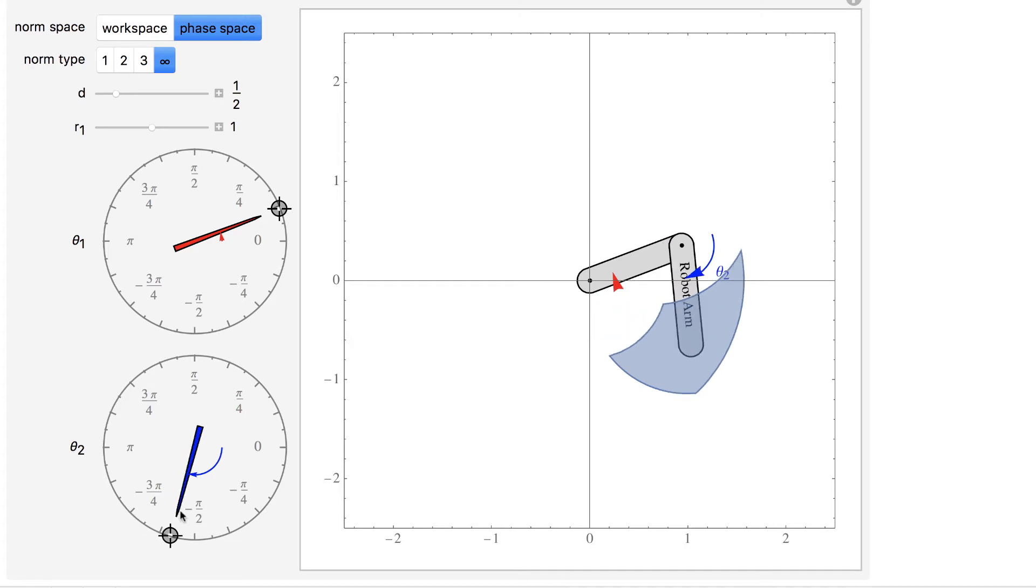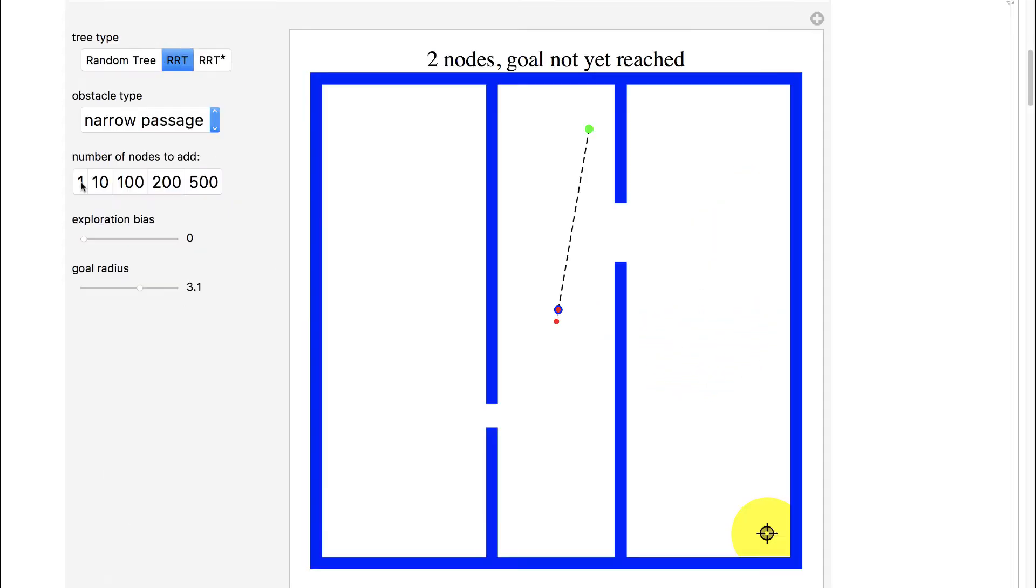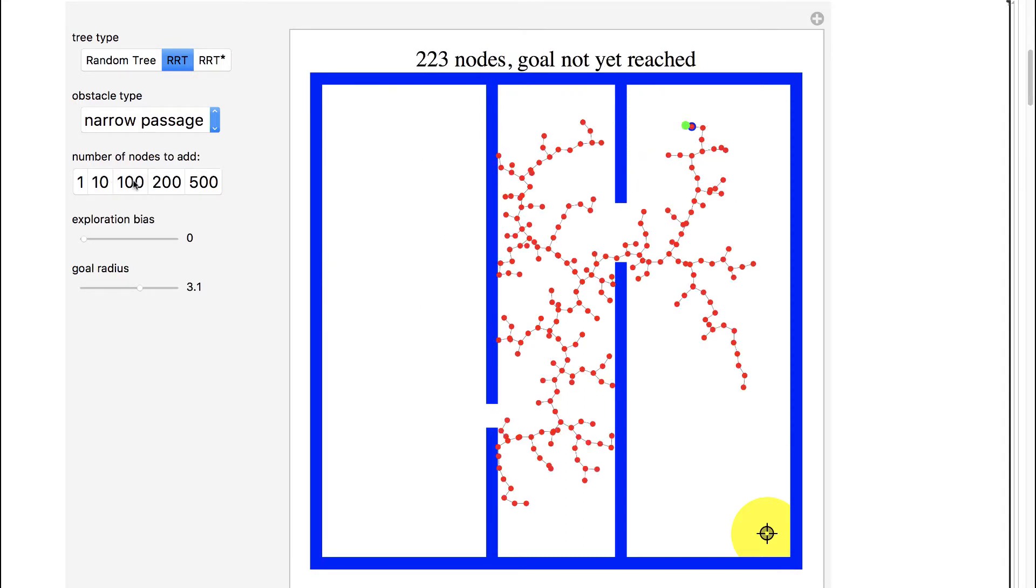The measurement of distance between two configurations of the same robot is necessary for many robot motion planners, such as probabilistic roadmap methods and rapidly expanding random trees.